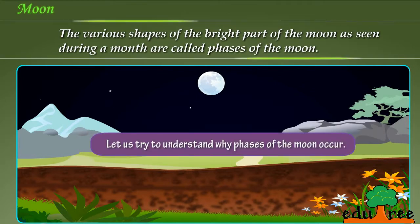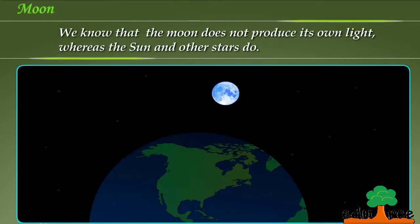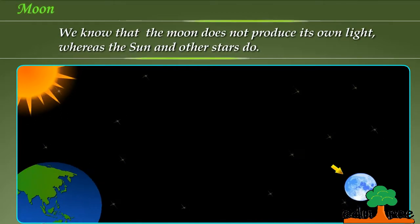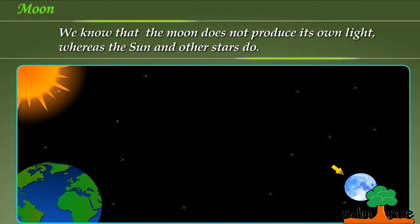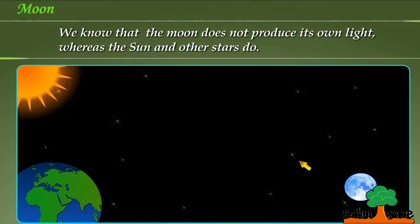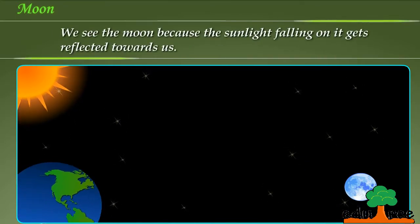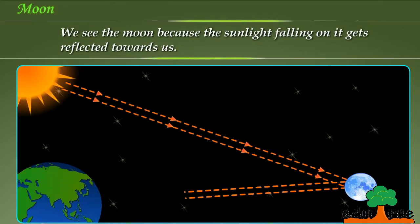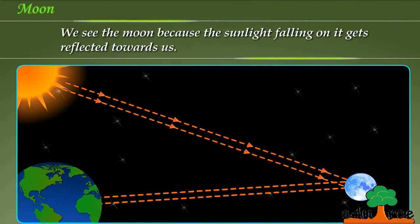Let us try to understand why phases of the moon occur. We know that the moon does not produce its own light, whereas the sun and other stars do. We see the moon because the sunlight falling on it gets reflected towards us.